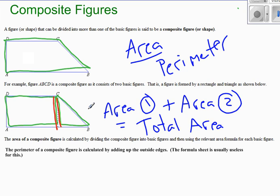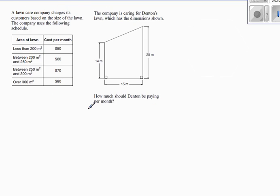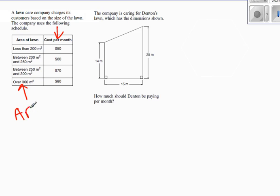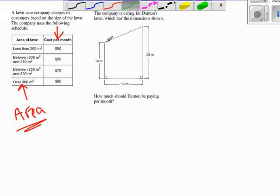Let's look at a couple of questions together. A lawn care company charges customers based on the size of the lawn: less than 200 meters squared is $50 a month, and so on. The company is caring for Denton's lawn, which has dimensions shown — we want to consider this to be a composite shape. To figure out how much he pays per month, I have to figure out the area of his lawn. To deal with composite shapes, we want to divide them into their basic shapes.